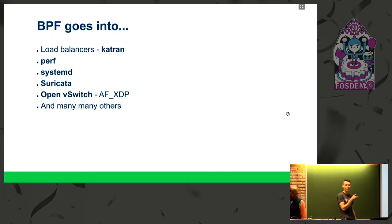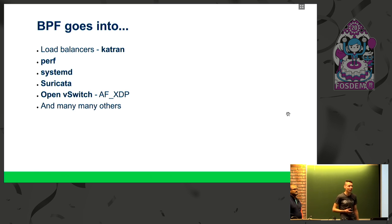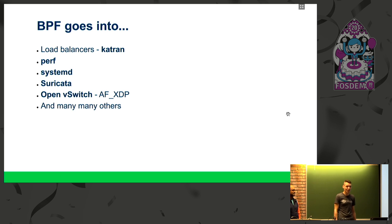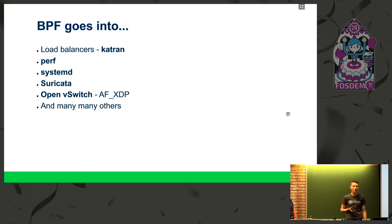Here are examples of other projects using BPF. There is a load balancer written by Facebook called Katran, which is open source. The Linux utility Perf uses BPF for tracing kernel function calls. Systemd has a basic firewall based on BPF so you can define basic rules for services. Suricata uses BPF extensively. Open vSwitch has the AF-XDP driver. AF-XDP is the alternative to DPDK — although DPDK itself also supports it. In DPDK, you normally expose the network device directly to user space with DPDK's network driver.